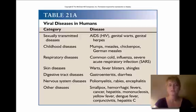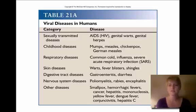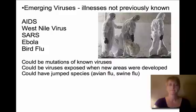Here's a table showing some diseases in humans caused by viruses. Sexually transmitted diseases — AIDS, genital warts, genital herpes — are all viruses. Childhood diseases that we have vaccines for — mumps, measles, chicken pox, and German measles — are viruses. Respiratory diseases like the common cold and the flu are viruses, and things like warts, fever blisters, and shingles are also caused by viruses.